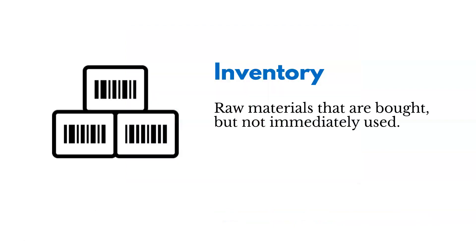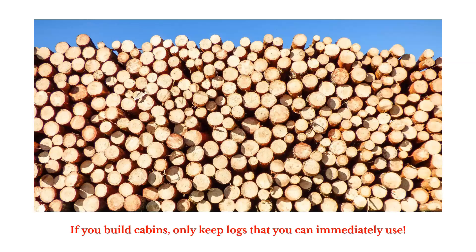Then there's the waste of inventory — purchasing raw materials but not immediately using them, allowing them to just sit around and go bad. You've got to pay storage costs, and it gets expensive. For example, if you build log cabins, you only want to keep the logs you can immediately use. Those logs can rot if they sit around too long, and bugs can get in them — they need to be cut, dried fairly quickly, and then used.